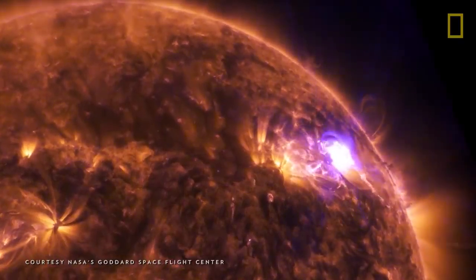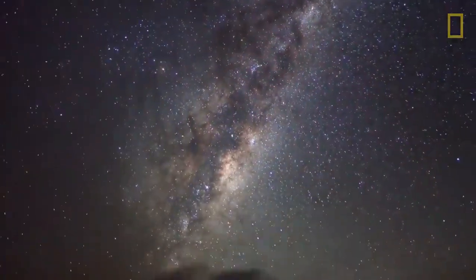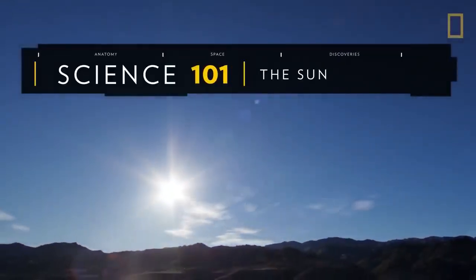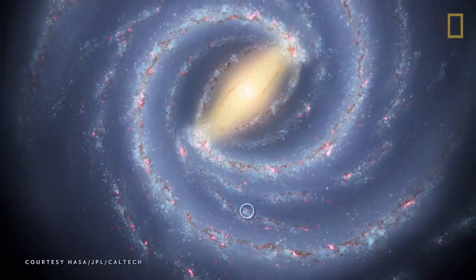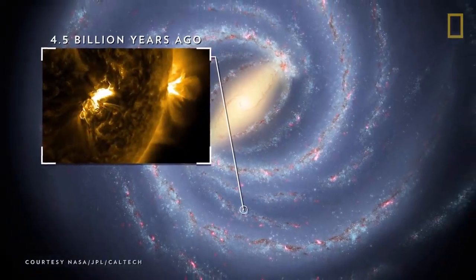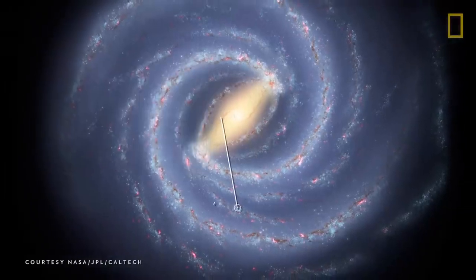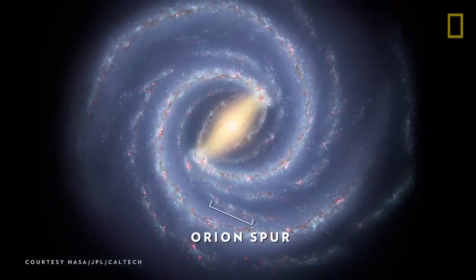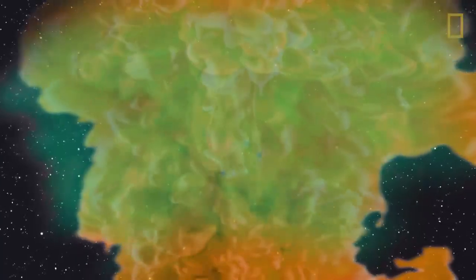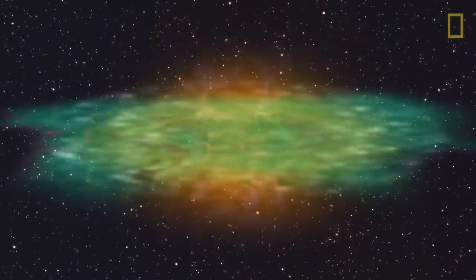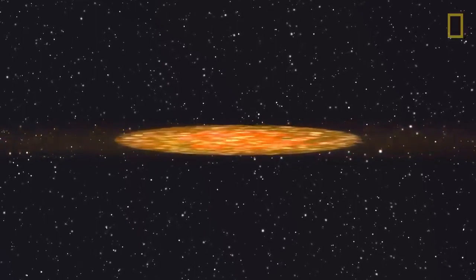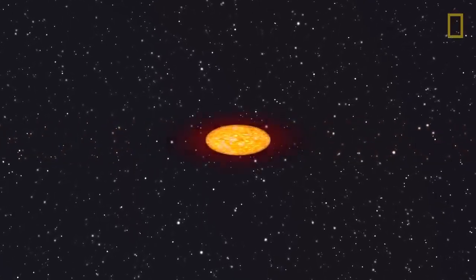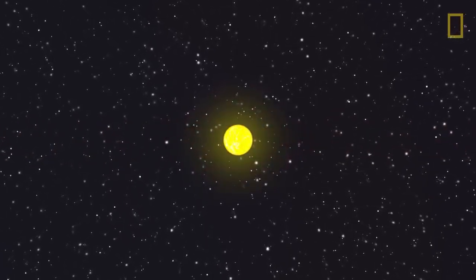While billions of stars are scattered throughout the universe, the one at the center of our solar system plays a special role for us here on Earth. Our sun formed about 4.5 billion years ago in the Milky Way galaxy's Orion Spur. It was born when a cloud of dust and gas, known as a solar nebula, collapsed, and in the middle of this formation, matter condensed into a burning ball of gas that became our sun.